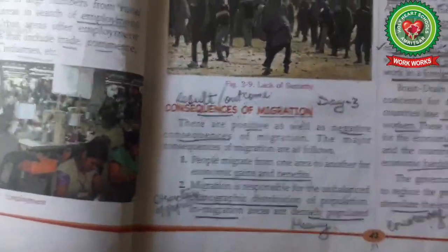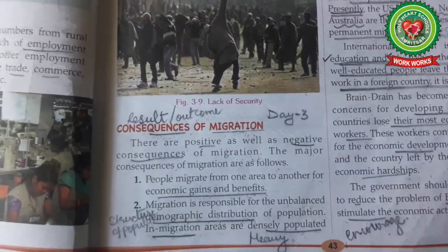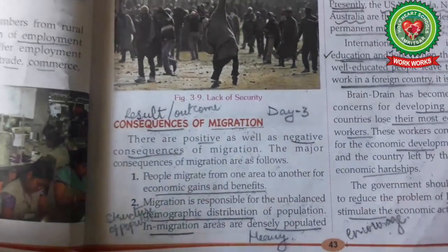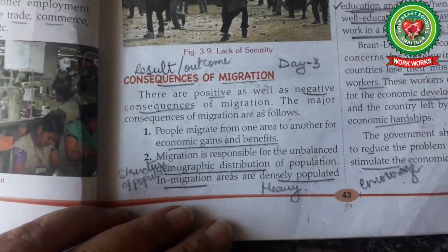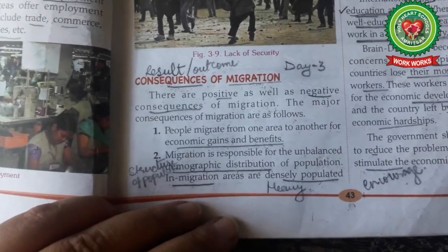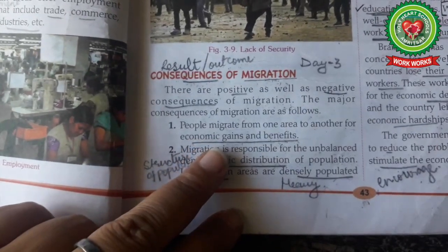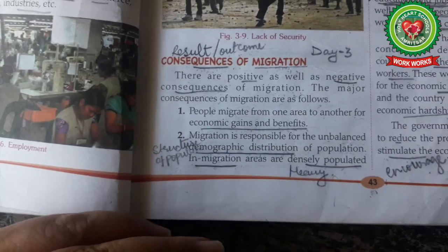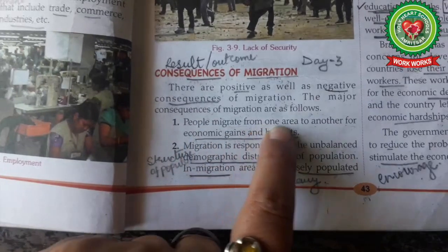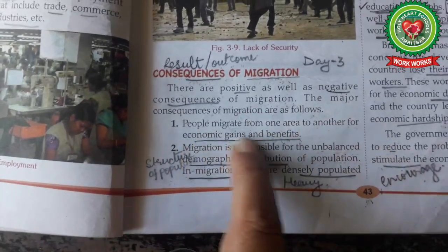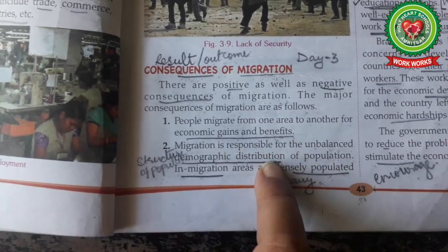Open your page number 43 of your geography book. The topic is consequences of migration. There are positive as well as negative consequences. Consequences means result or outcome of migration; migration means movement of people. The major consequences of migration are as follows: people usually migrate from one place to another for gaining better facilities and better jobs, meaning people migrate from one area to another for economic gains and benefits.